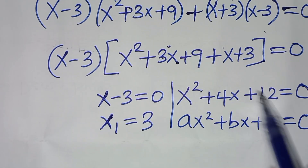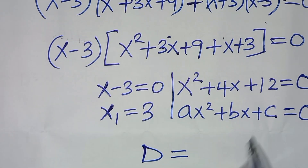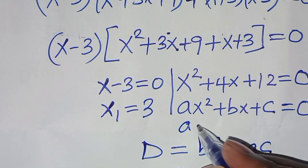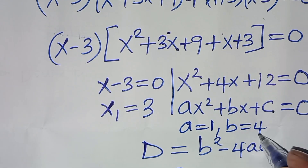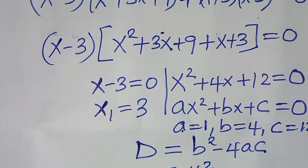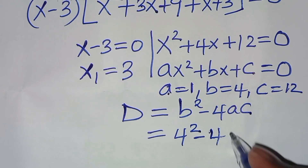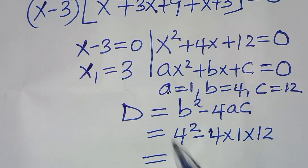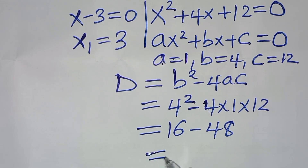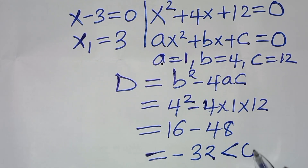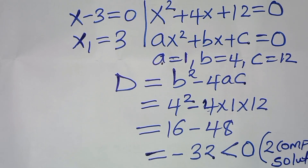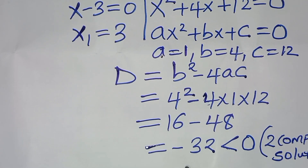Let's assess the nature of this quadratic equation by determining the discriminant, which is b squared minus 4ac. From the quadratic equation, a equals 1, b equals 4, and c equals 12. Substituting, we have 4 squared minus 4 times 1 times 12, which is 16 minus 48, giving minus 32. This is less than 0, which implies we have two complex roots, and this will not give us a real solution.